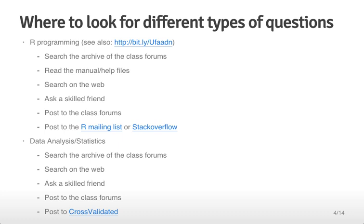For data analysis and statistics, it's slightly different, although the theme is sort of the same. You can search the archive of the class forums, you can search on the web, or you can ask a skilled friend, or you can post to the class forums. Outside of the class forums, CrossValidated is a forum for asking general statistics related questions. In general, if you take a little bit more time to ask your questions in the right way, then you'll be much more likely to get responses on any of the forums you might post to.